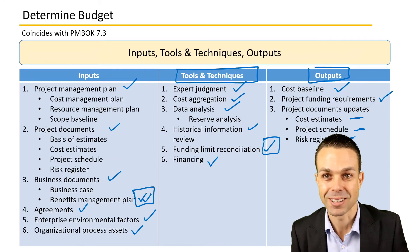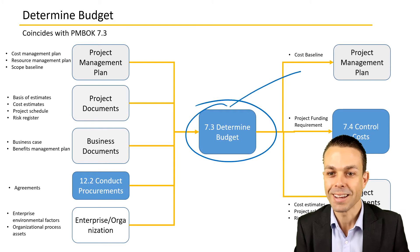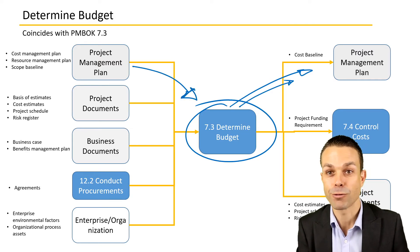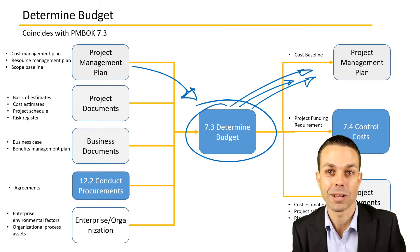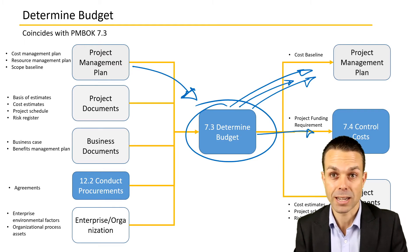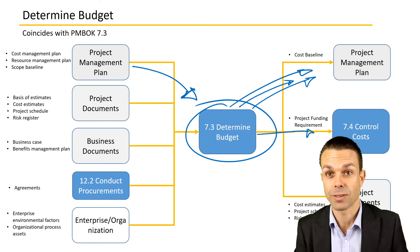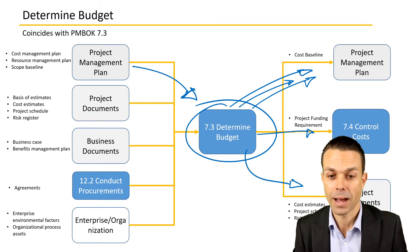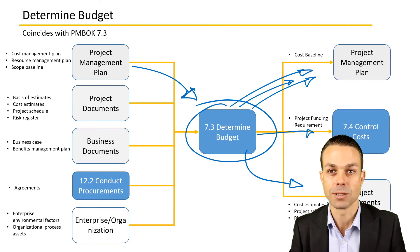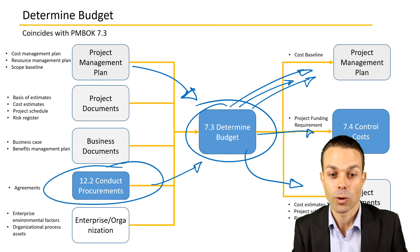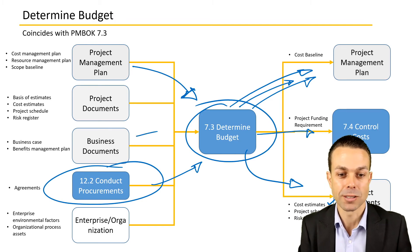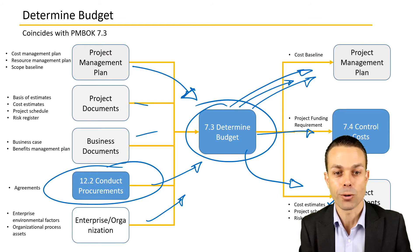Determining the budget has input into the project management plan — we gather information from it and put information back into it as we update it. We're also controlling costs over time if things go off track, making preventative actions or fixing defects as they appear, and updating project documents such as cost estimates and the risk register. Procurements are also an input — if we're paying someone to do work for us, that will definitely have an impact on our budget.